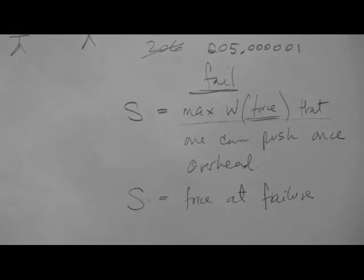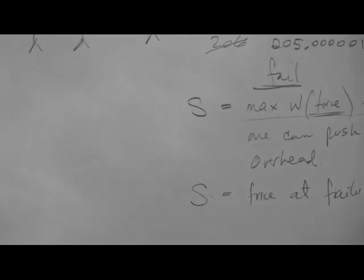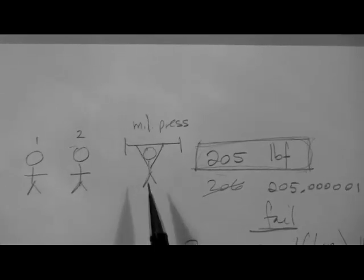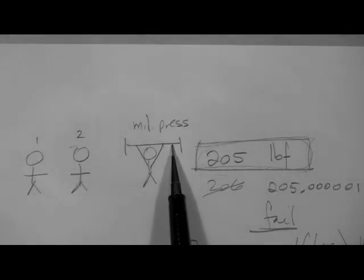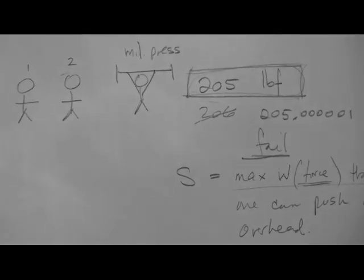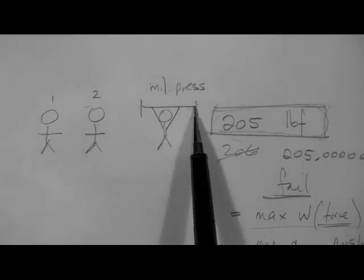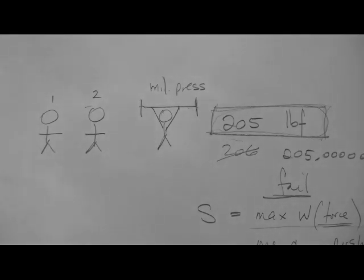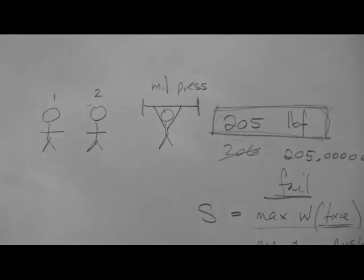So in summary, we define what the failure situation is, and then we attach a strength to that situation. In this case, the failure situation is not being able to push this weight, so we attach the strength definition to the maximum weight that can be pushed once.